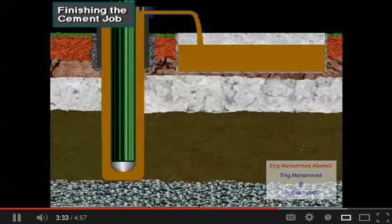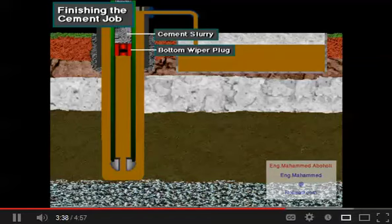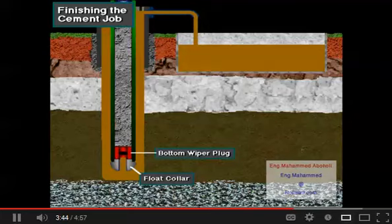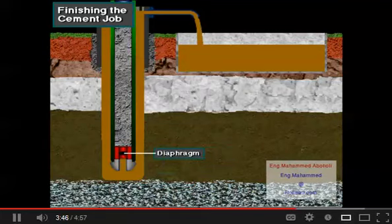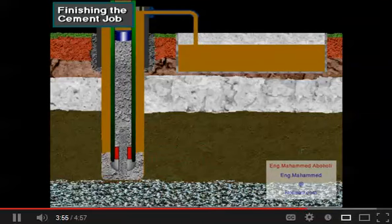Cement pump pressure moves the cement slurry to the cementing head, where a crew member releases the bottom wiper plug. Slurry pushes the bottom plug down the casing until it seats in the float collar. When the plug seats, continued pump pressure on the slurry ruptures a diaphragm on the bottom of the plug, allowing cement slurry to go out the guide shoe and into the annulus.